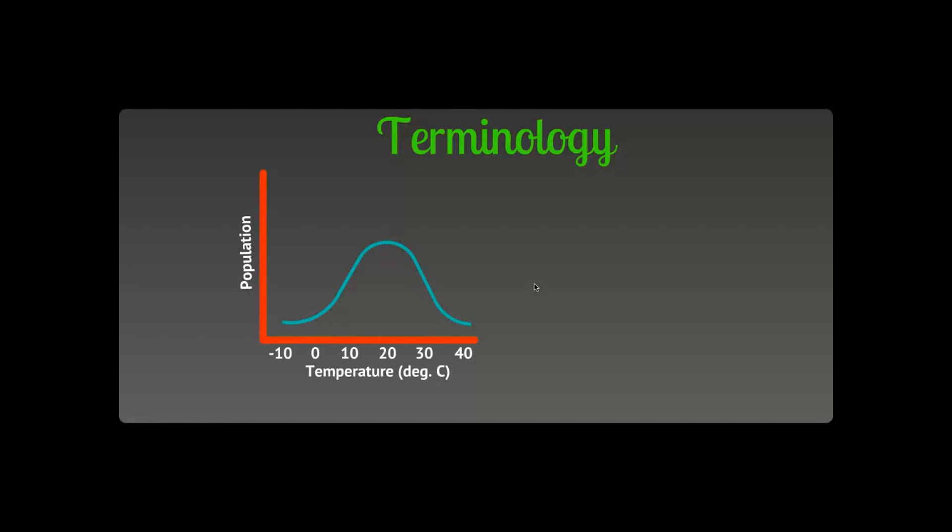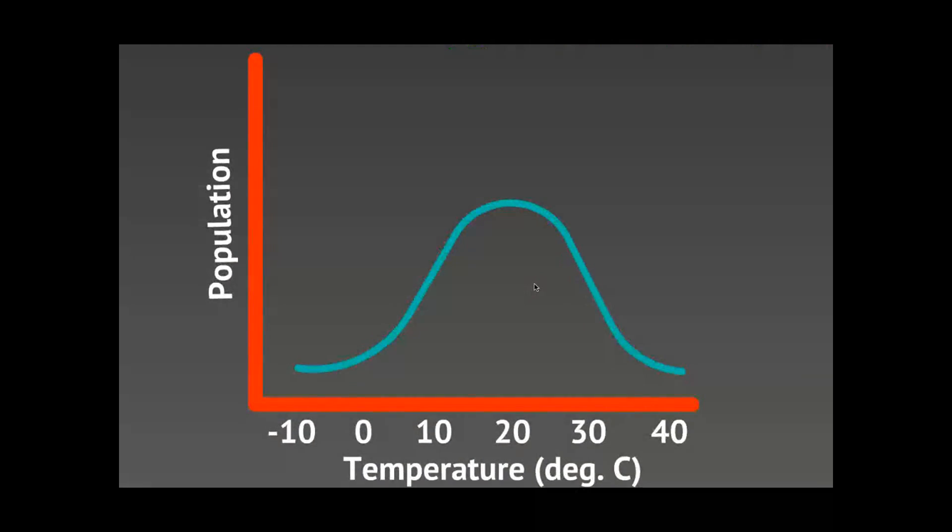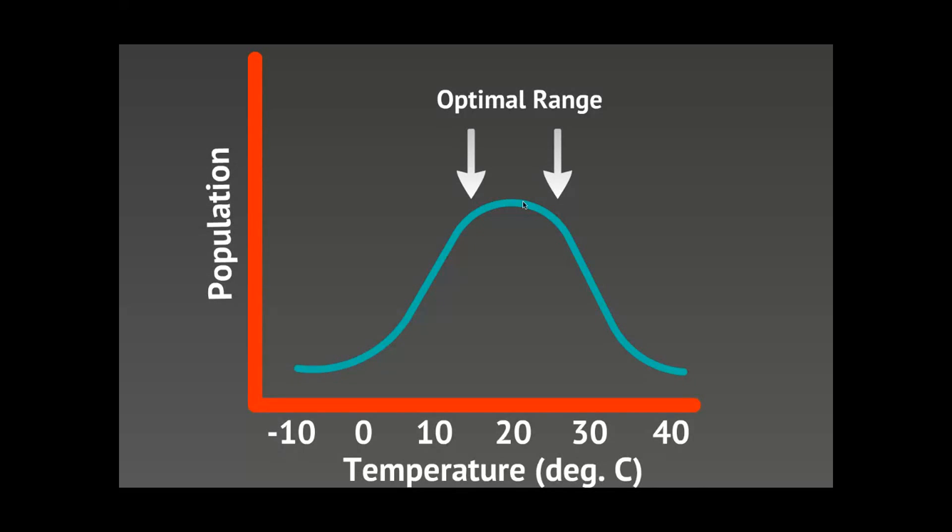And because of that we have a set of terminology that goes along with the story of Goldilocks and the three bears. The first one is this area where it's just right. So this area of the hump where the population is at its highest we're going to call that the optimal range for this organism. Optimal range is where that organism lives the best. It thrives the best. It's where that organism can survive.